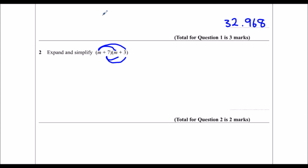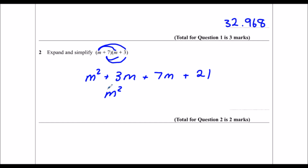So m times m first — that's m squared. m times 3 is 3m. 7 times m is 7m, and 7 times 3 is 21. So I've expanded, and now I'm going to collect the like terms. I've got 3m and 7m, so that gives me 10m, and I've still got the 21 on the end. So that's the answer.